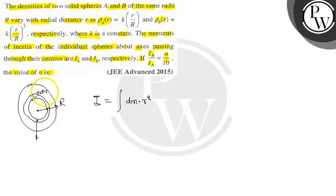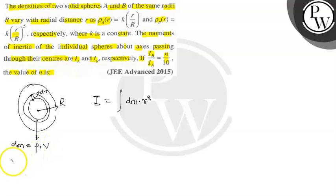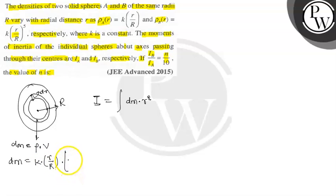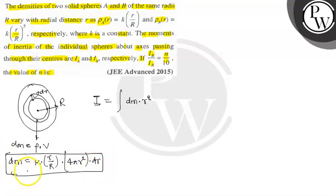This shell has thickness dr. The elemental mass dm equals ρ times dV. For sphere A, dm equals ρ_A times 4πr²·dr, which gives dm = k·(r/R)·4πr²·dr. This is the elemental mass of a thin shell taken from sphere A.